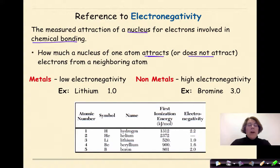Metals in general tend to have low electronegativity values. For example, lithium has an electronegativity value of one.